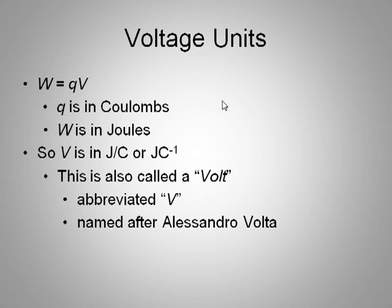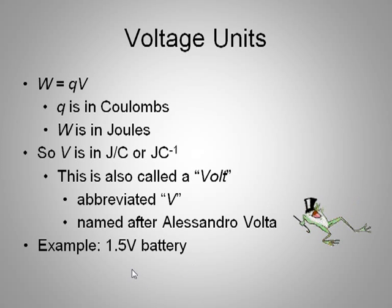And it's named after Alessandro Volta. So he was an Italian guy who would like to rip frogs in half and connect electrical leads to their nerves and make their legs jump long after they were dead. So an example of how to use this voltage unit is a 1.5 volt battery, which is like the common D cells that we've been using in lab.